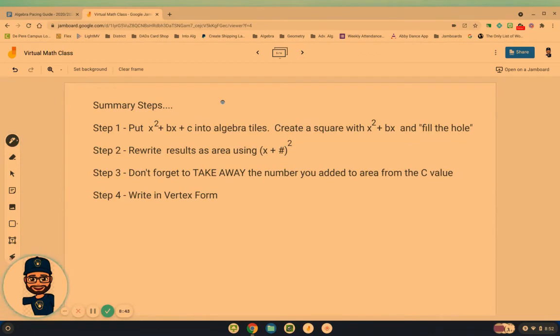Now I kind of summarized those steps on this page, and what I would probably do is pause and write this down so that way, as we go through the next example, you can follow those steps. Step one is to create that square with just the x squared plus the bx part so that you can fill in that hole. And then we're going to try and write those results as x plus some number squared. But whatever number we used to fill that hole, don't forget to take it away from that original c value. And then let's write it in vertex form.